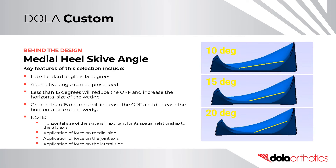Medial heel skive angle: the lab's standard angle is 15 degrees. Alternative angles can be prescribed. If less than 15 degrees is prescribed, it will reduce the orthotic reaction force and increase the horizontal size of the wedge. If greater than 15 degrees is prescribed, it will increase the orthotic reaction force and decrease the horizontal size of the wedge. Note: the horizontal size of the skive or wedge is important for its spatial relationship to the subtalar joint axis, including the application of force on the medial side, on the joint axis, and on the lateral side.